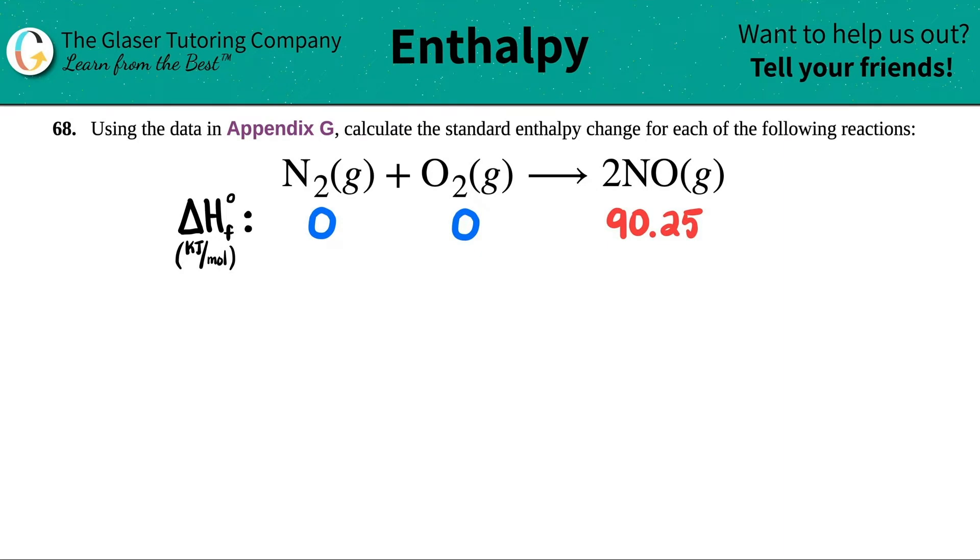Number 68. Using the data in Appendix G, calculate the standard enthalpy change for each of the following reactions. We have nitrogen gas, N2 gas, plus oxygen gas, O2 gas, yields two NOs.